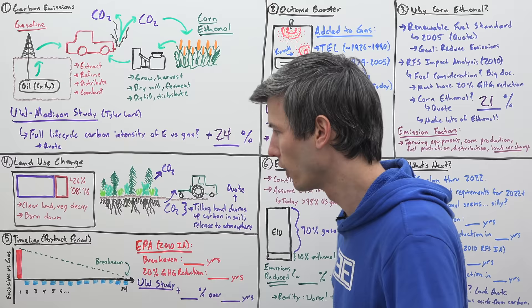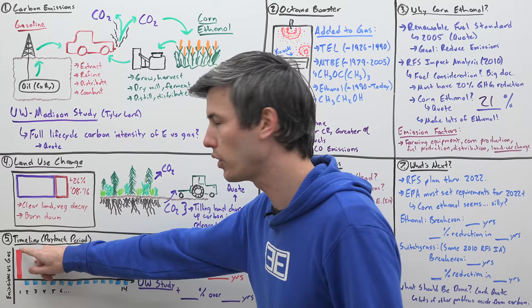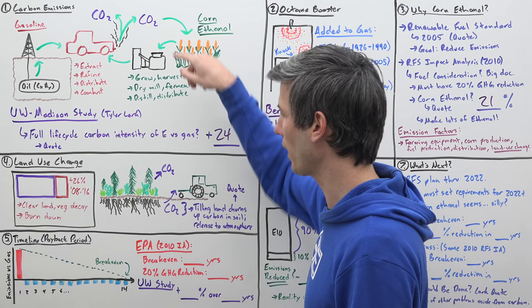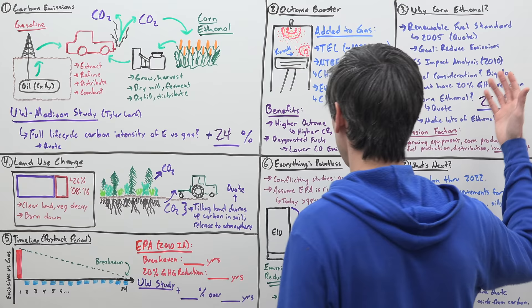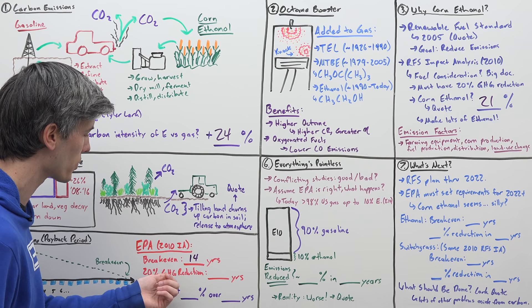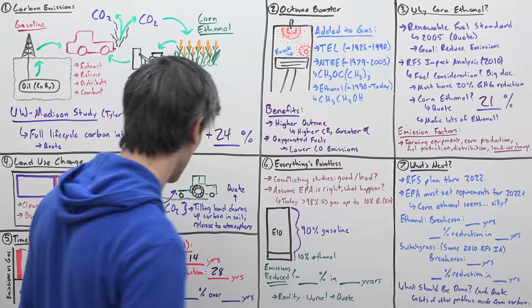So if you look at a timeline of your net emissions versus gasoline, initially on year one, you're going to have a huge amount of net negative emissions. And then each year after that, as you're growing that corn, you're taking carbon from the atmosphere to grow that corn. And so you have a net benefit versus gasoline. So eventually you are going to have a point where you break even and then a point where you start to run into a benefit. So based on this 2010 impact analysis, what was that timeline? Well, in order to break even for ethanol made of corn takes 14 years. And in order to have a 20% reduction in greenhouse gases, that's going to take 28 years.